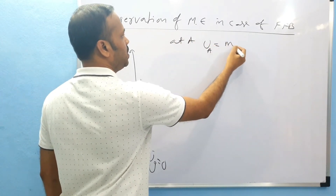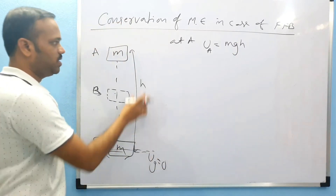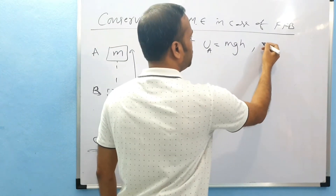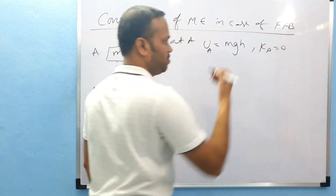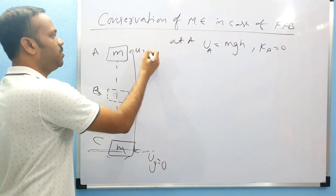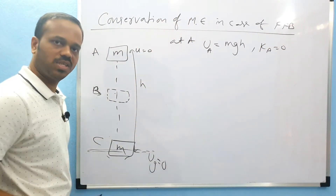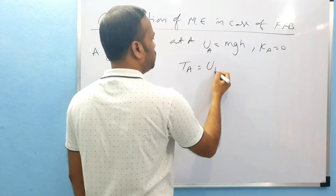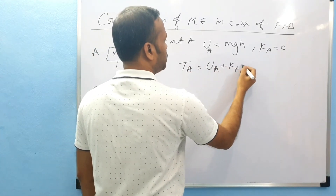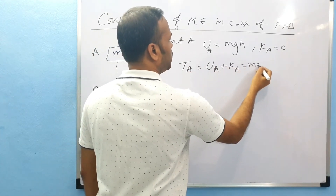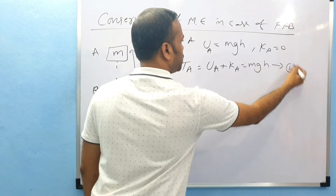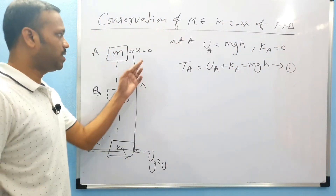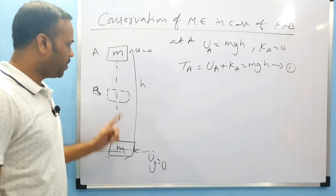What is the potential energy at A? Potential energy is mgh, since the height is h. What is the kinetic energy? Zero, because it is a freely falling body — the initial velocity is zero. So what is total energy at A? Total energy equals UA plus KA, which gives us mgh. This is equation number one.